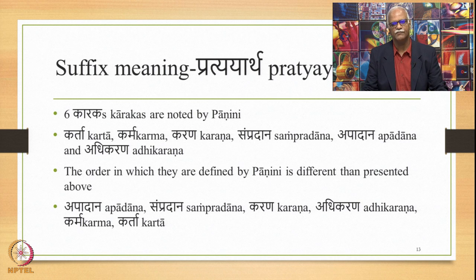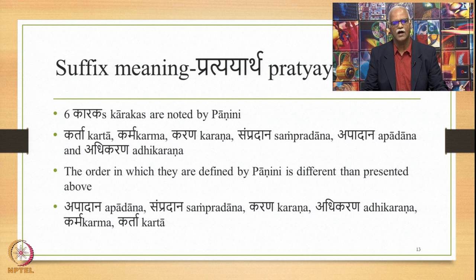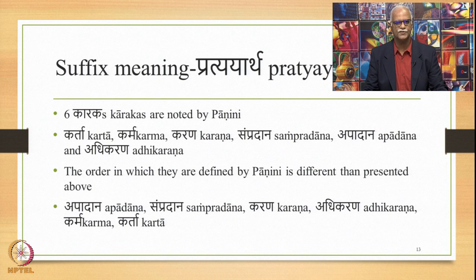If we look at the order in which Panini defines the Karakas, it is different from what was presented above. Panini states them as: Apadana, Sampradana, Karana, Adhikarana, Karma, and Kartha. Apadana is stated by sutra 1.4.25, Sampradana by 1.4.32, Karana by 1.4.42, Adhikarana by 1.4.45, Karma by 1.4.49, and Karta by 1.4.54. The significance of this order will be studied when we look at the definitions of all these Karakas in detail later in this course.